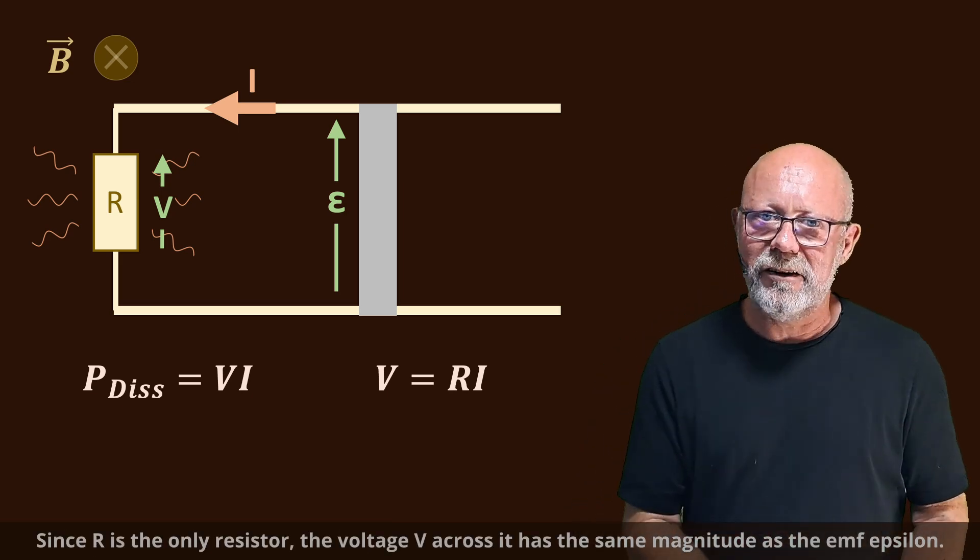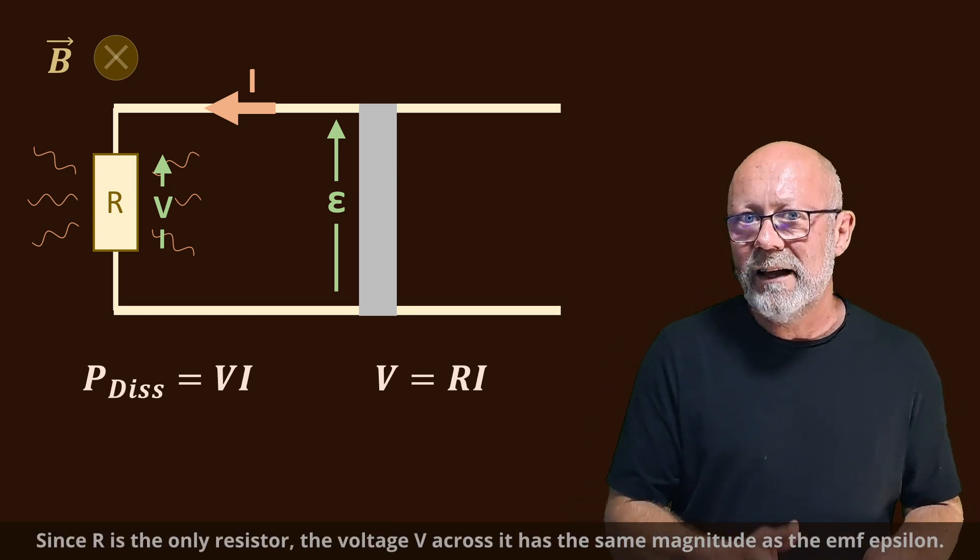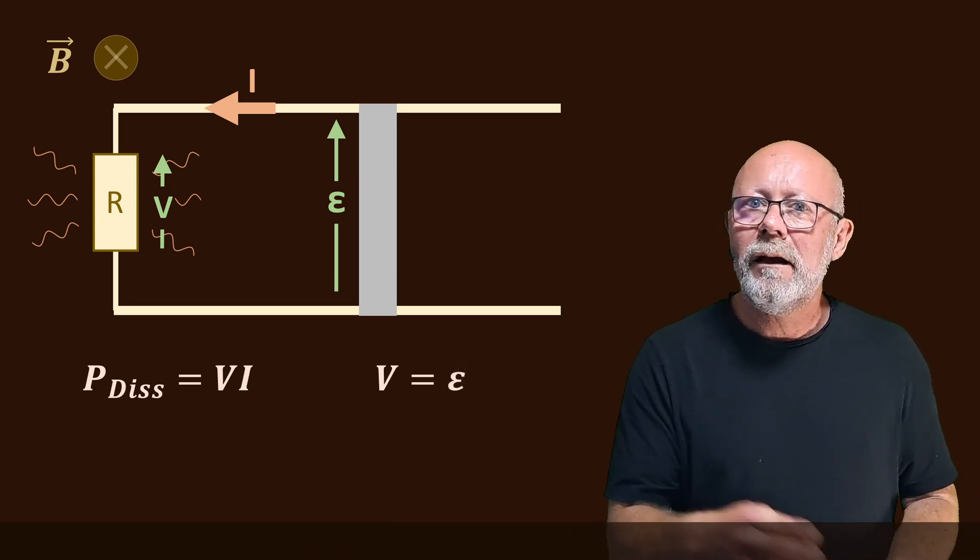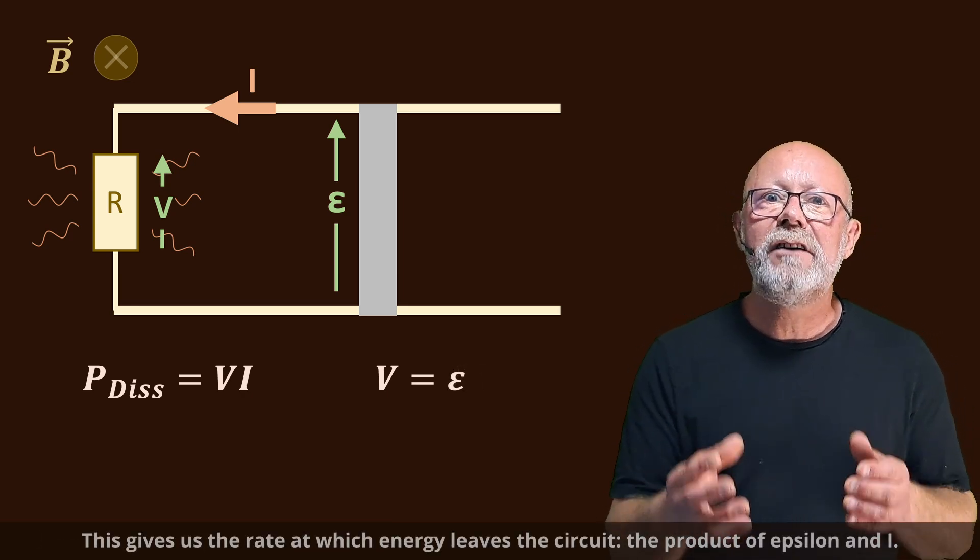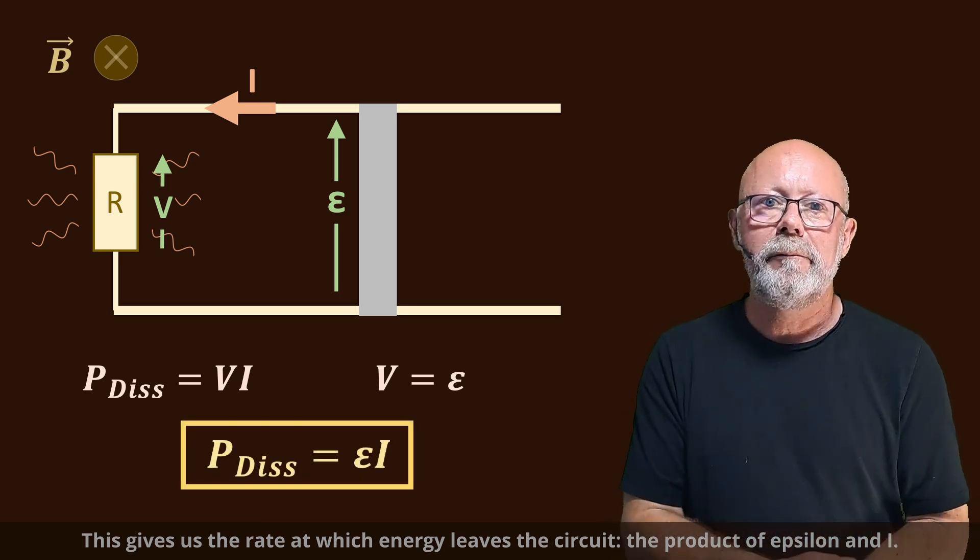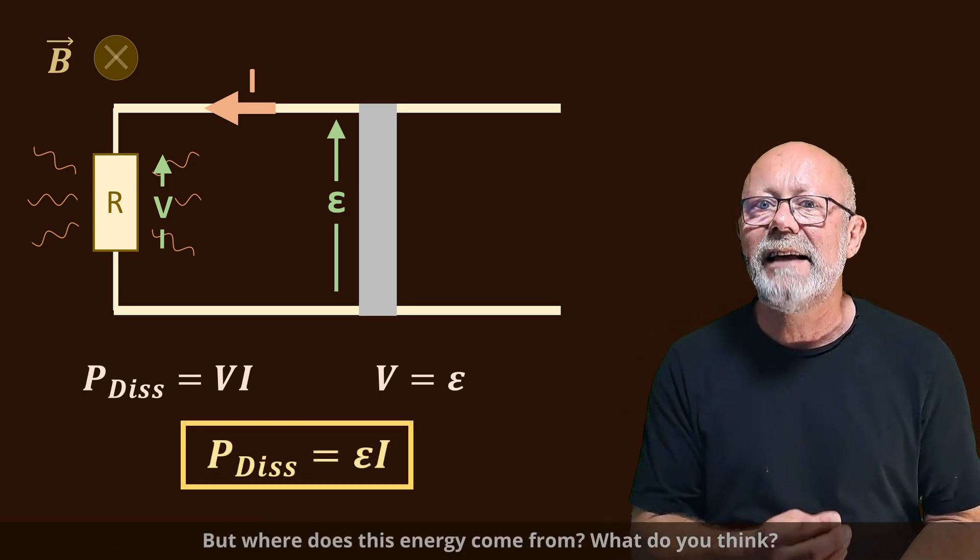Since R is the only resistor, the voltage V across it has the same magnitude as the EMF epsilon. This gives us a rate at which energy leaves the circuit, the product of epsilon and I.